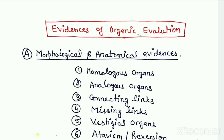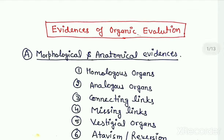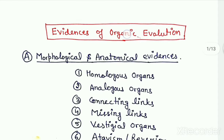Hello dear students. In the last two lectures we are reading evidences of organic evolution, in which we are actually trying to disprove the theory of special creation which states that all the living organisms were formed all of a sudden out of nothing and they do not have any interrelationship between them. With help of these evidences we are also trying to justify the concept of organic evolution by proving interrelationship between organisms belonging to the different groups.